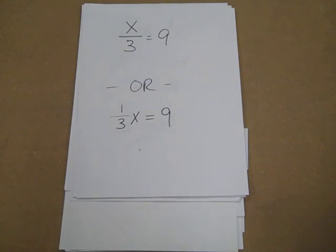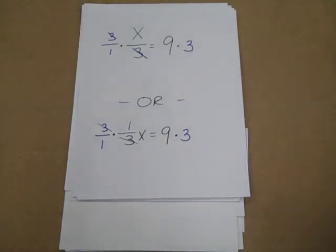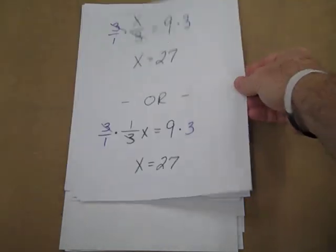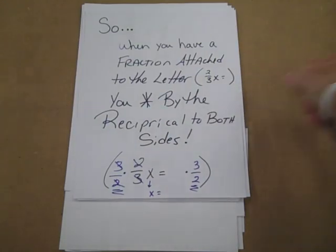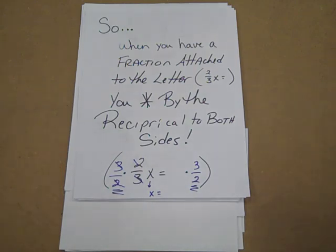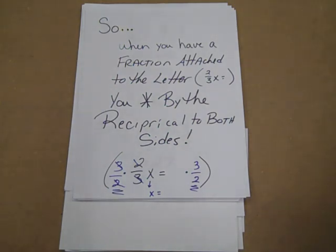We look at what looks like a division problem. We can also make it look like a multiplication problem with a fraction — to show both of those, I'm showing my work. Here we're basically multiplying by the reciprocal to get our answer. So when you have a fraction attached to the letter, you multiply by the reciprocal on both sides. That way it will take care of any of the fractions in it. If we check it, it still works out.